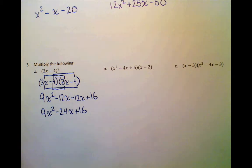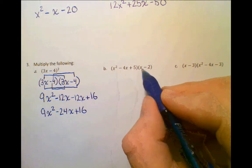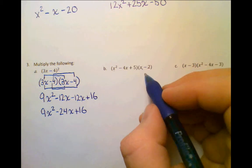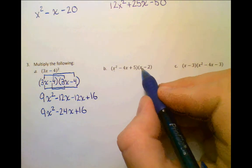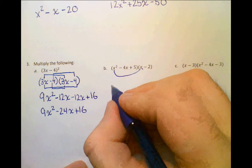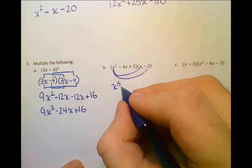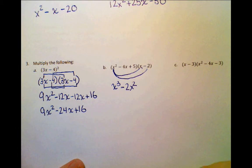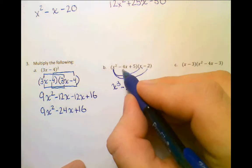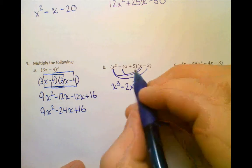In the next problem, we're not multiplying two binomials — we can't use FOIL because FOIL only deals with four terms. So we have to use the distributive property: take each term and multiply it by everything in the other polynomial. I'm going to take x squared and multiply it by x to get x cubed, then x squared times negative 2 to get negative 2x squared. Moving on: negative 4 times x gives negative 4x squared.